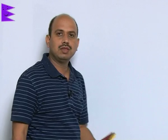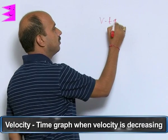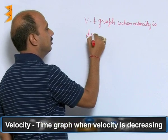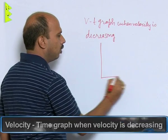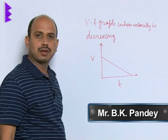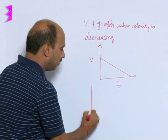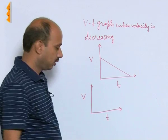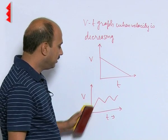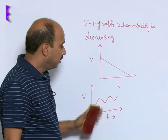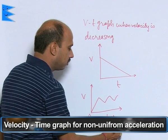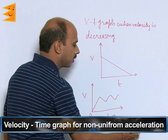We will do the velocity-time graph when the velocity is decreasing. We can draw it like this: here is velocity, here is time, and velocity is decreasing with time. If you take another type of graph — velocity on Y axis and time on X axis — the graph can go like this: velocity increasing, then decreasing, then increasing, then decreasing. This represents non-uniformly accelerated motion. It is a V-T graph for non-uniform acceleration. When the velocity-time graph is not a straight line, we can say the body has non-uniform acceleration.